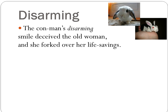Our next word is disarming. Let's look at context clues and try to figure it out. The con man's disarming smile deceived the old woman and she forked over her life savings. So if you were trying to con someone out of their money, why would you smile at them? Maybe you're trying to earn the person's trust so that they'll give you a large amount of money. Also, let's look at the pictures for clues — cute little bunny, looks sweet, looks lovable, but secretly the bunny is a vampire. I'm alluding to the book Bunicula if you read that in elementary or middle school. Great book.